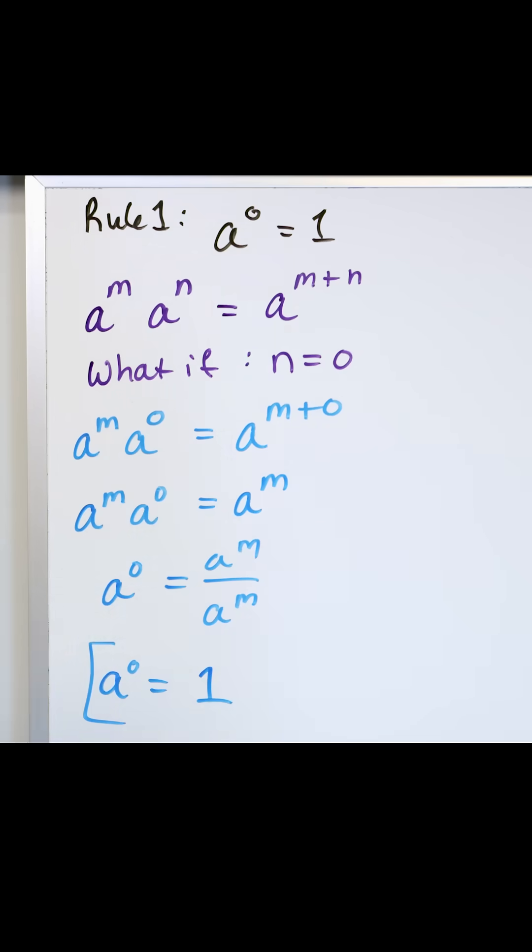Now, from the proof, we can see why. Because if we allow a to actually be zero, so it's zero to the zero power, then that would mean you would have zero to the m, right?